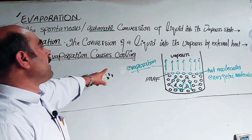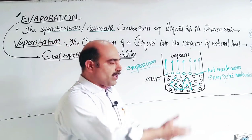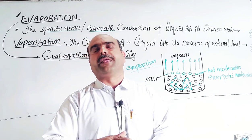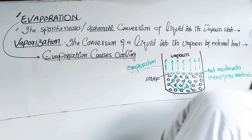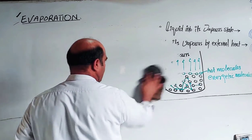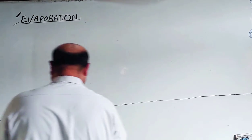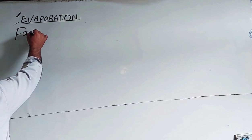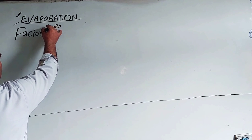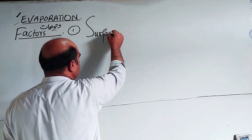Now let's discuss the factors affecting the rate of evaporation. The basic background has been covered; now we will go through the factors one by one. The first factor is surface area.